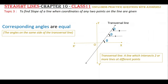Hello everyone. Today I am going to tell how to find slope of a line when coordinates of any two points on the line are given. In my previous video I told how to find slope if the inclination of the line is given. So here we have to find the slope of the line if any two points on the line are given.